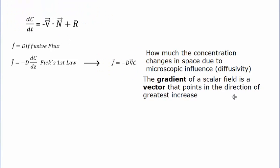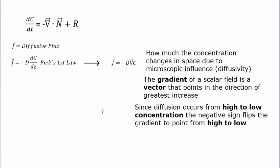The gradient — del applied to C — points in the direction of greatest increase. But since diffusion moves molecules from high concentration to low concentration, we want the diffusive flux to point from high to low. That's why we have the negative sign: it reverses the gradient so the diffusive flux points in the correct direction — from high to low concentration, which is the direction we commonly associate with diffusion.